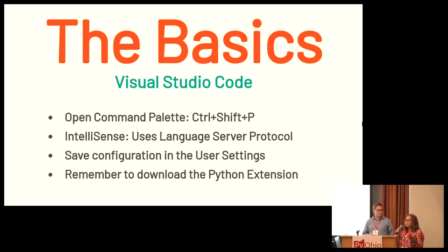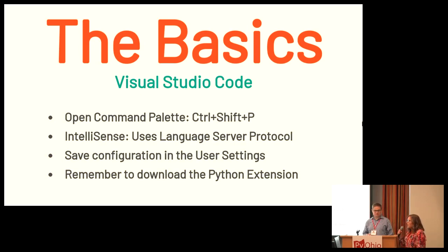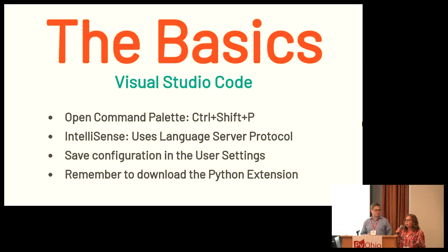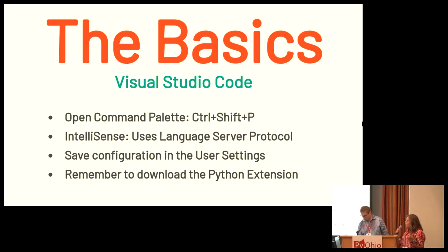Upon installation, Visual Studio Code comes with Microsoft IntelliSense, a language server protocol that makes it easy to use linting, auto-completion, and source code highlighting right away. Also importantly, when you change settings through the command palette, they are saved in a workspace settings file, meaning you can only use them on a project basis. To use your settings across all projects, you need to save configurations to the user settings file, which you can open through the command palette.